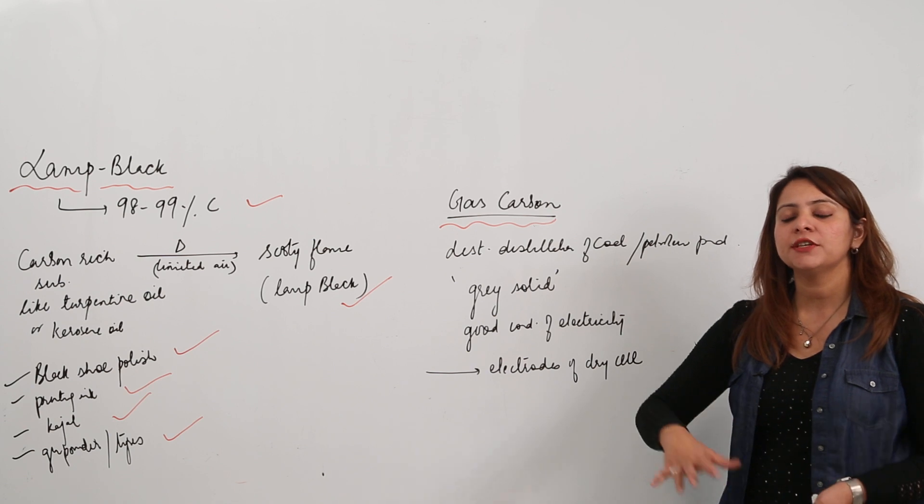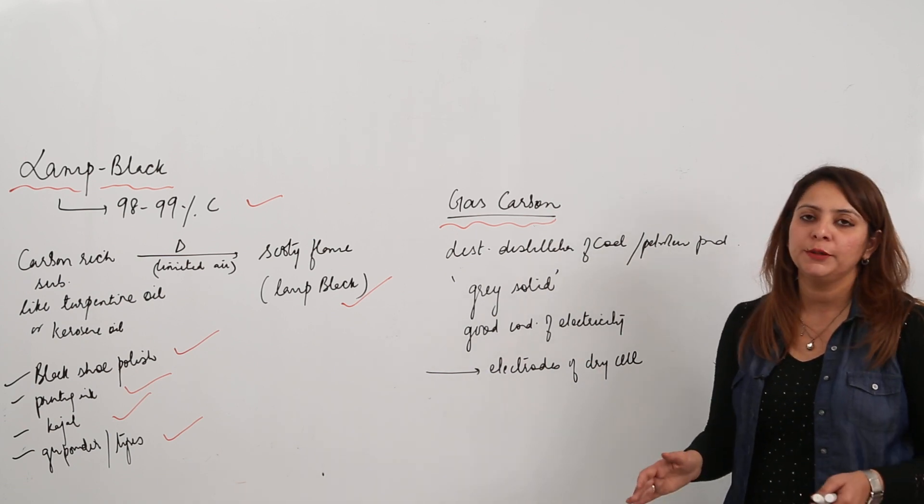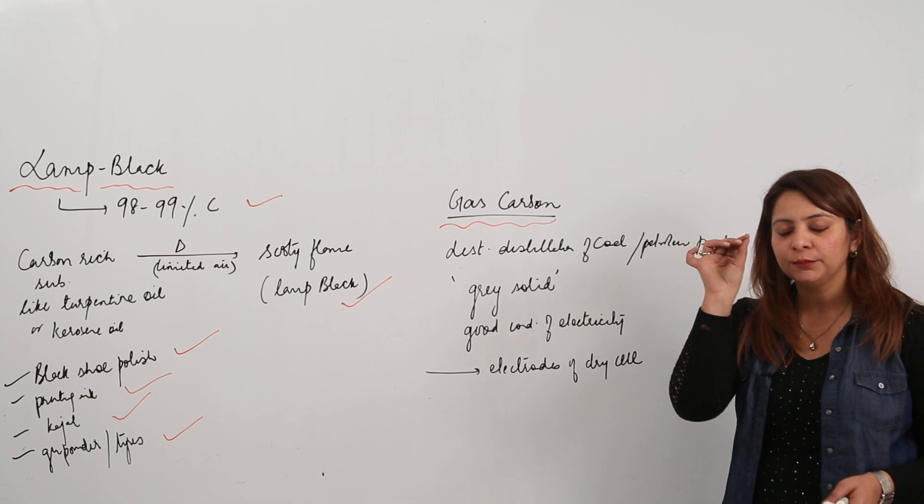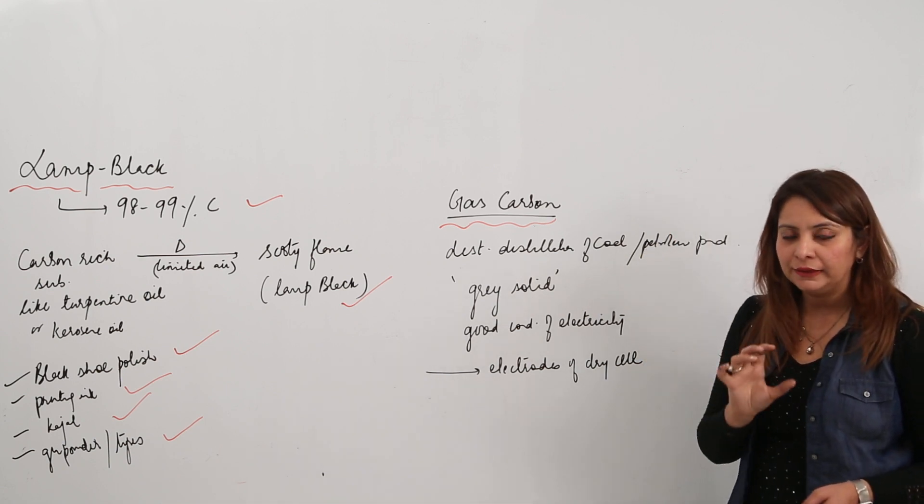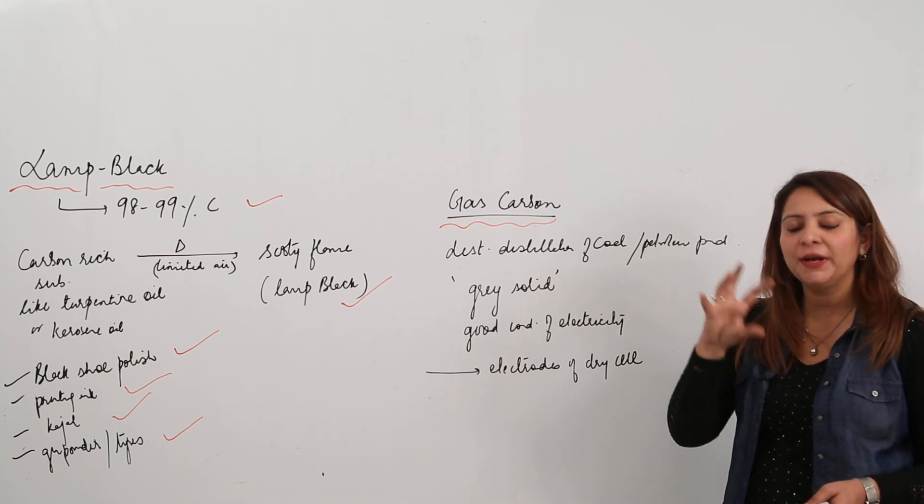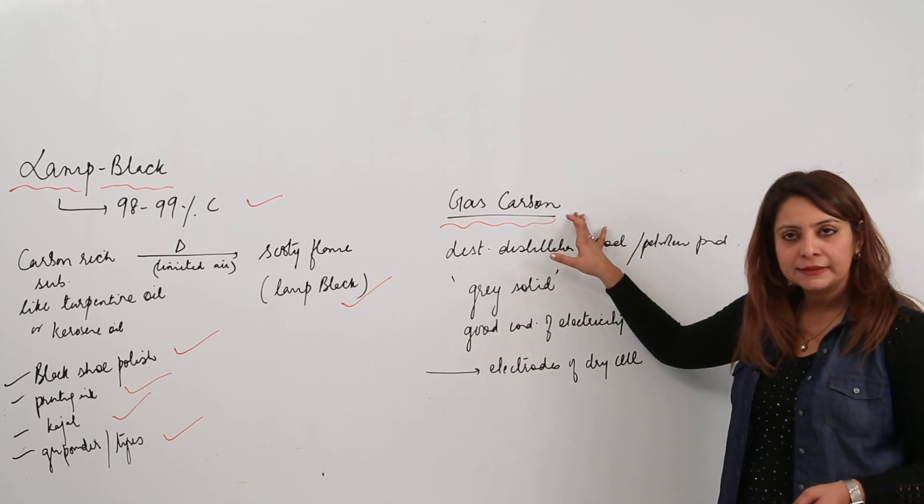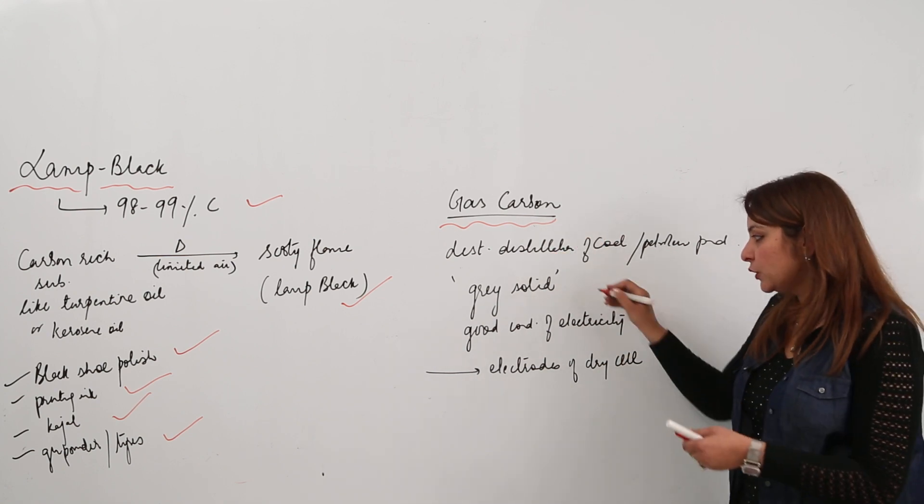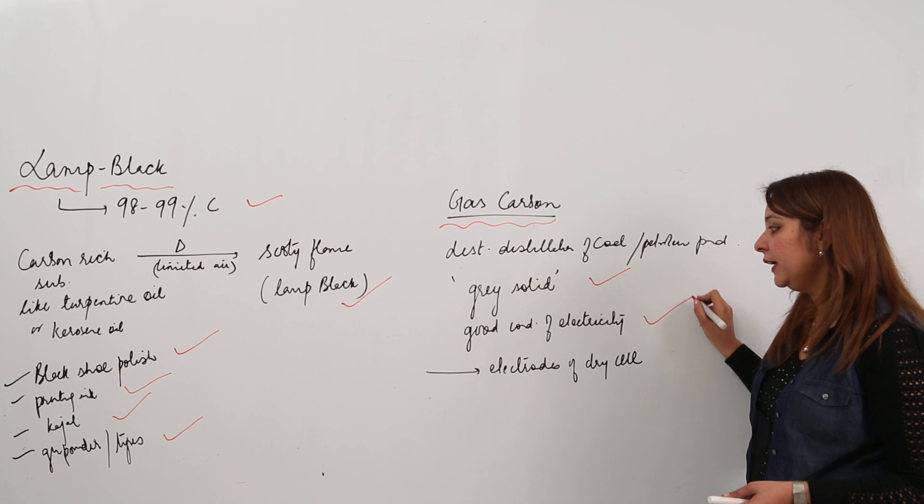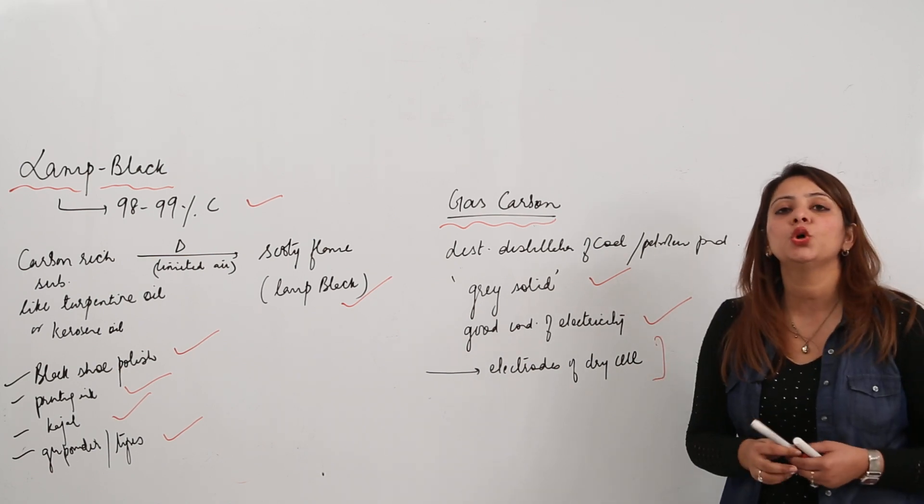Whenever you carry out the destructive distillation of coal or any petroleum products, on the wall of the container you can see particles which are present there. They are called gas carbon, and they are actually gray solid, good conductor of electricity, mainly used for making the electrodes of the dry cell.